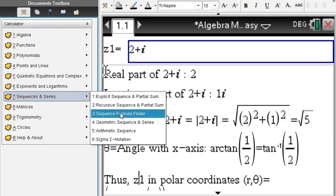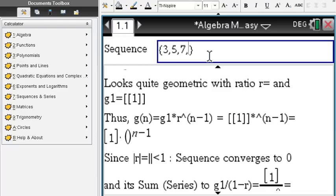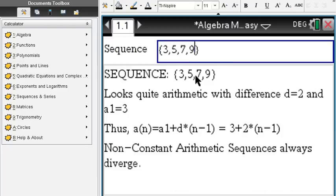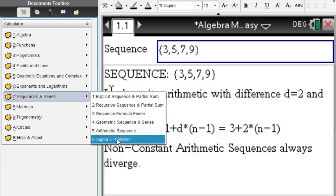This sequence formula finder is very nice because say you're given a sequence of four numbers such as 3, 5, 7, 9. We actually find out a formula for that sequence of numbers which is here: 3 plus 2 times n minus 1 since this is an arithmetic sequence. You can also find the sums, partial sums of the sequences, do sigma notation.